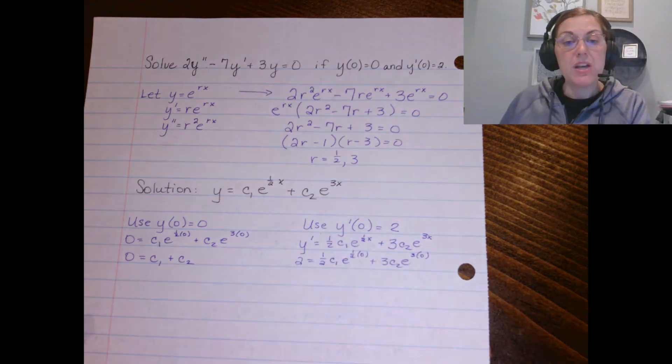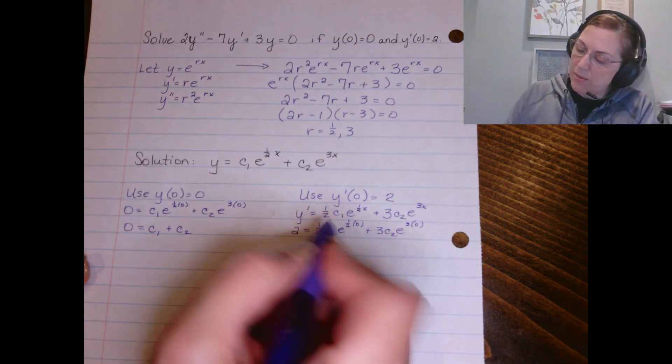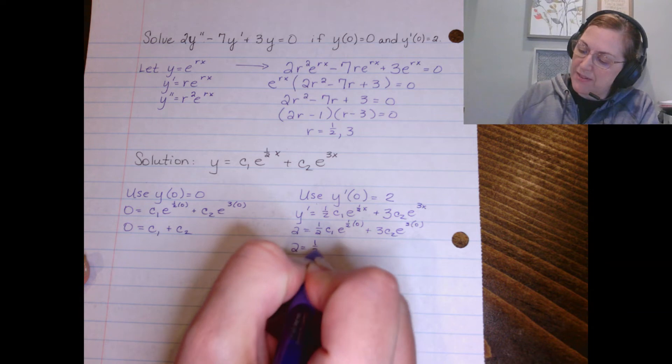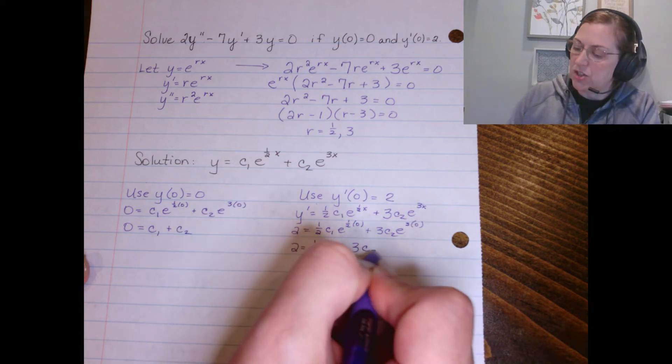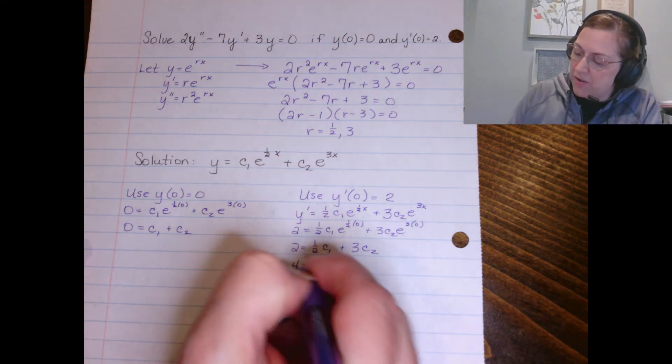All right, of course again e to the zero is one, so I'm left with 2 = 1/2 c₁ + 3c₂. I'm going to just go ahead and multiply by two to clear that fraction so I don't have to play around with the fraction anymore.